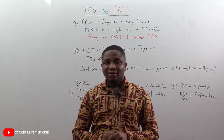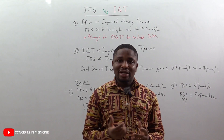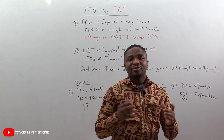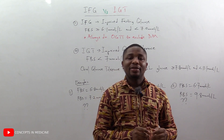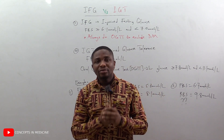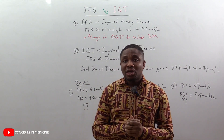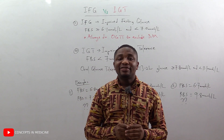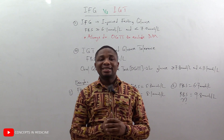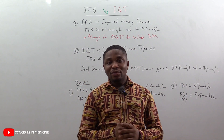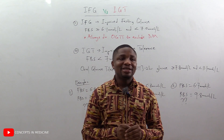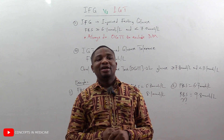For impaired glucose tolerance, the fasting blood sugar is less than 7.0 mmol/L, and the oral glucose tolerance test — the two-hour glucose, synonymous with random blood sugar — is greater than or equal to 7.8 mmol/L and less than 11.1 mmol/L. If it falls within that range, then we classify it as impaired glucose tolerance.